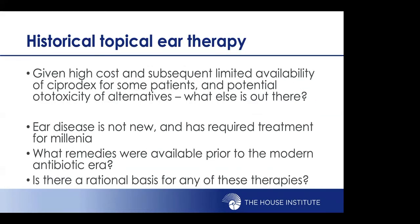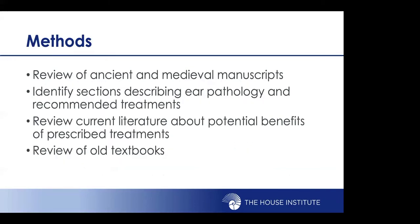Given the high cost and limited availability of Ciprodex for some patients, and the potential ototoxicity of alternatives, what else is out there? Ear disease is not new and has required treatment for millennia. What remedies are available prior to the modern antibiotic era, and is there any rational basis for any of these therapies? A review of ancient and medieval manuscripts was performed, identifying sections on ear pathology and recommended treatments, and reviewing current literature about the potential benefits of those treatments.